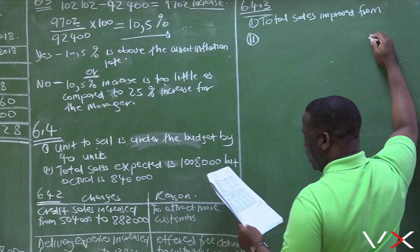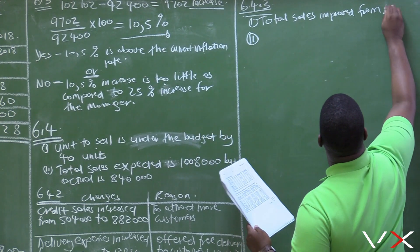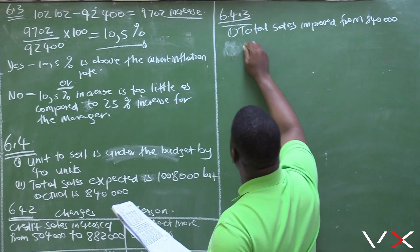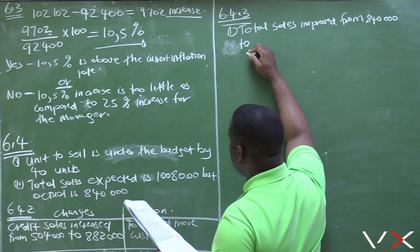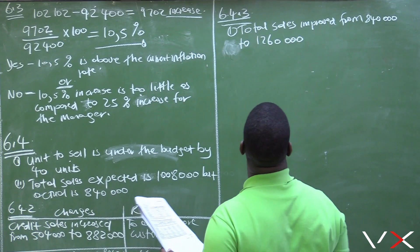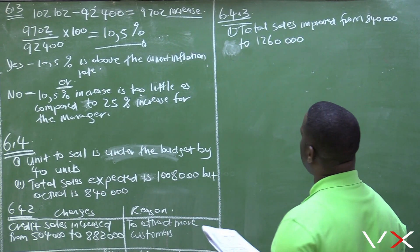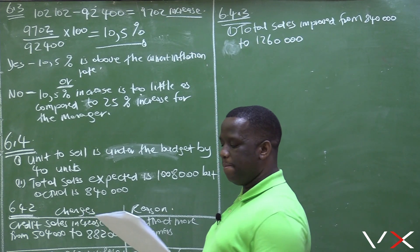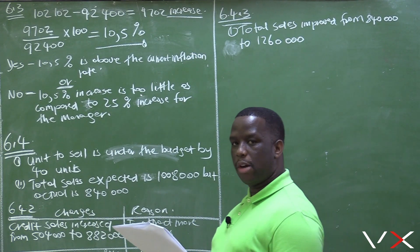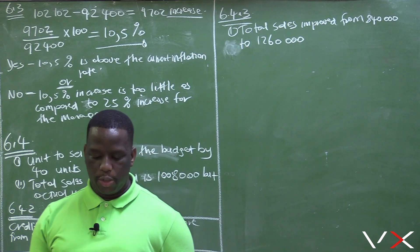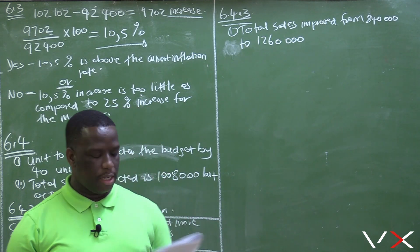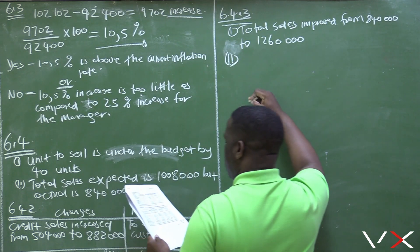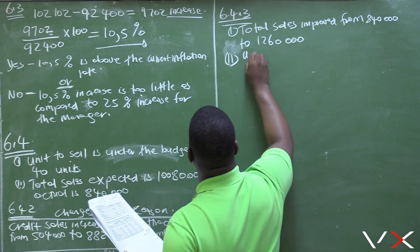Total sales improved from the actual figure of 840,000 in September to 1,260,000 in October. That's the first indicator that his strategies were indeed successful, because total sales improved from 840,000 in September to 1,260,000 in October, suggesting that his strategies are indeed successful.